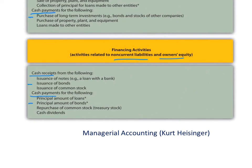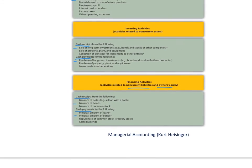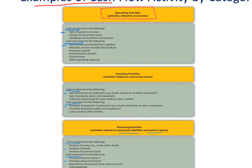The three sections of the statement of cash flows are operating activities, investing activities, and financing activities, and they are presented in this order.